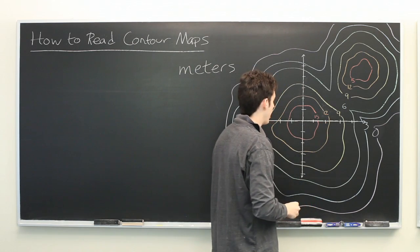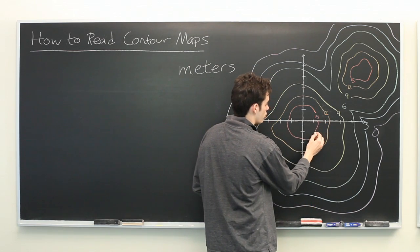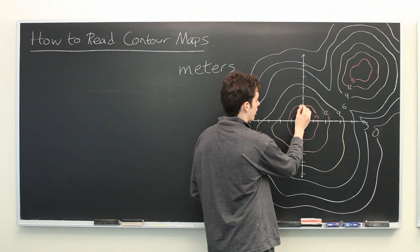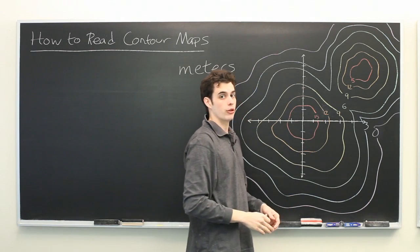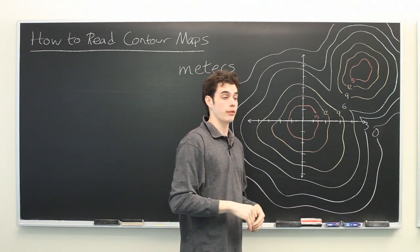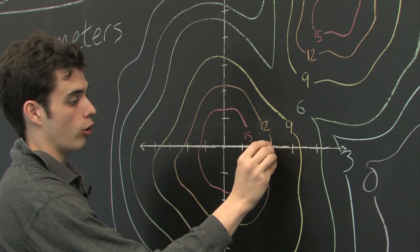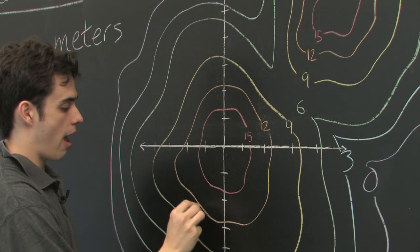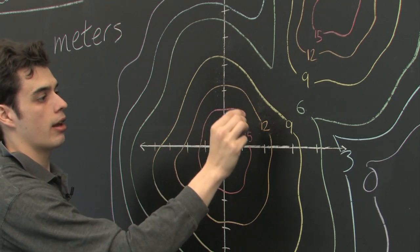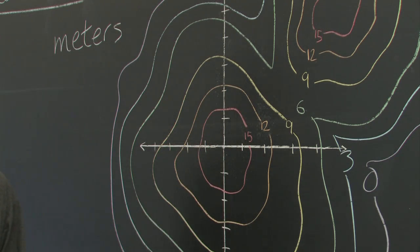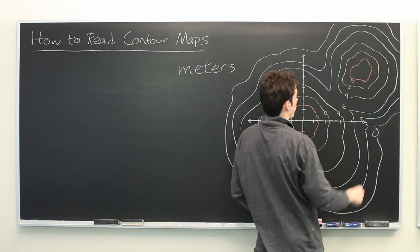What this notation means is that every point along this red blob here is at a height of 15 meters, presumably above sea level. Similarly, if you fall along this orange curve, every point on it is 12 meters above sea level. And so on and so forth for these other numbers.